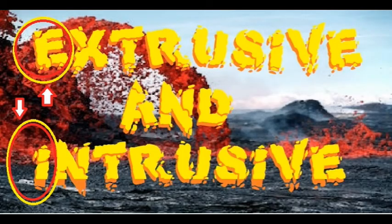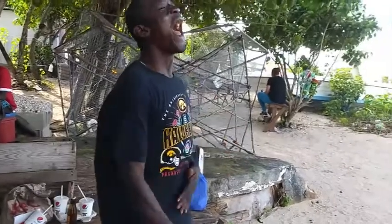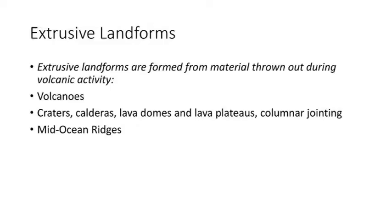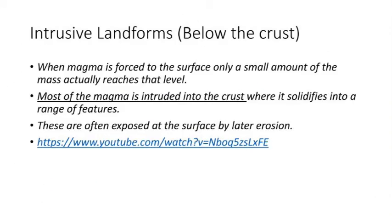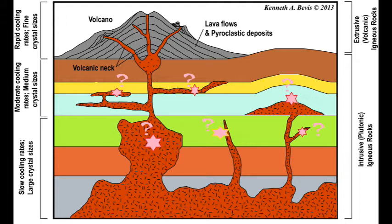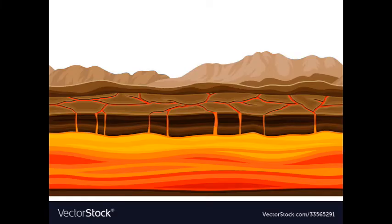If we look at the words 'extrusive' and 'intrusive,' they are pretty similar except one begins with an E and one begins with an I. Usually words like this — for example, 'exterior' and 'interior' — exterior would be outside and interior would be inside. It's a similar principle with extrusive and intrusive. So volcanic activity that takes place inside the earth's crust would be called intrusive, and those that appear on the surface would be extrusive. Your typical volcano would be an extrusive volcanic feature — the most prominent, most common type.